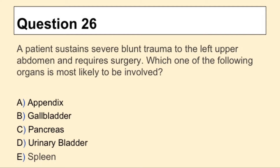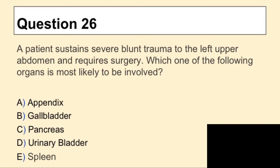Question 26. A patient sustains severe blood trauma to the left upper abdomen and requires surgery. Which one of the following organs is most likely to be involved?